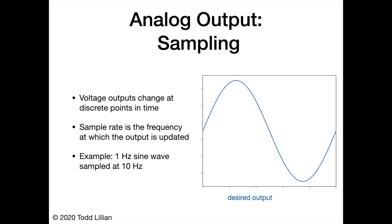Let's explore sampling in the context of analog output. Voltage outputs change at discrete points in time, and the sample rate is the frequency at which the output is updated. For a 1 hertz sine wave sampled at 10 hertz, we would get the signal shown in orange as output. Because the output is only updated every one-tenth of a second, it holds that value for the whole tenth of a second until it's updated again.